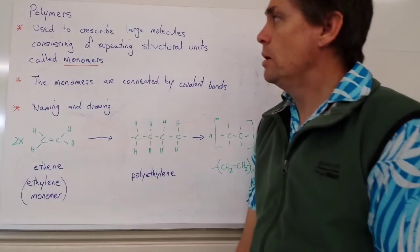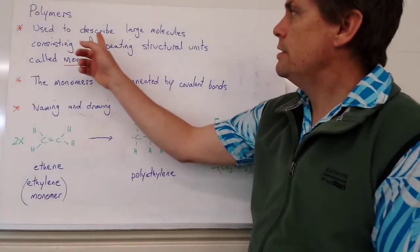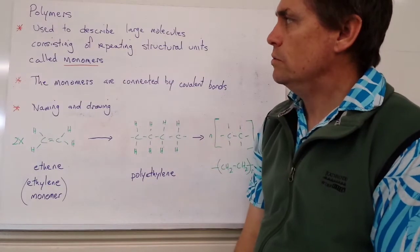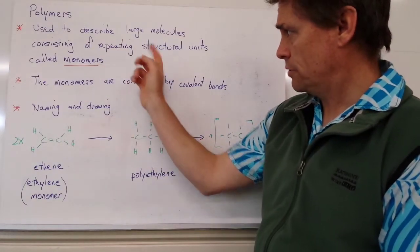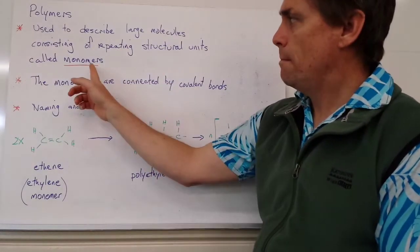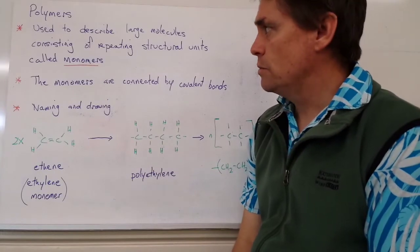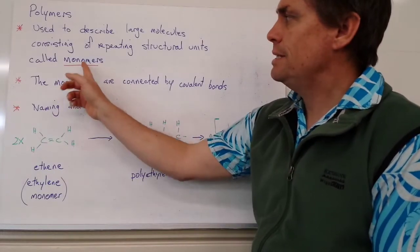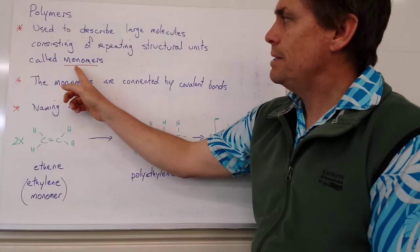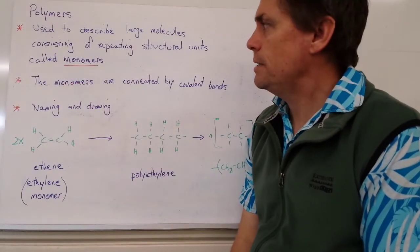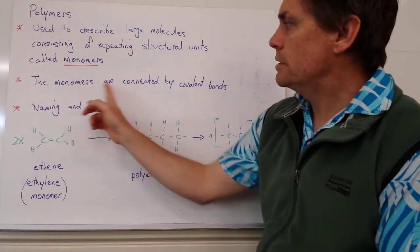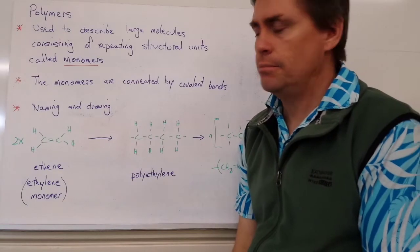Let's have a look at polymers. The word polymer is used to describe large molecules that consist of repeating structural units that we call monomers. The word monomer - mono means single - means a single unit of something. The monomers are connected by covalent bonds.